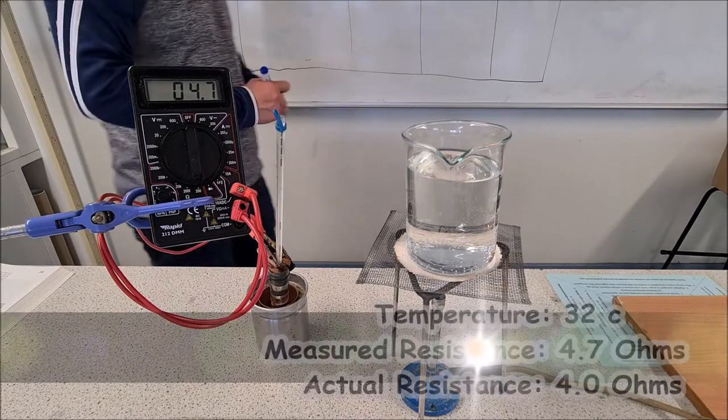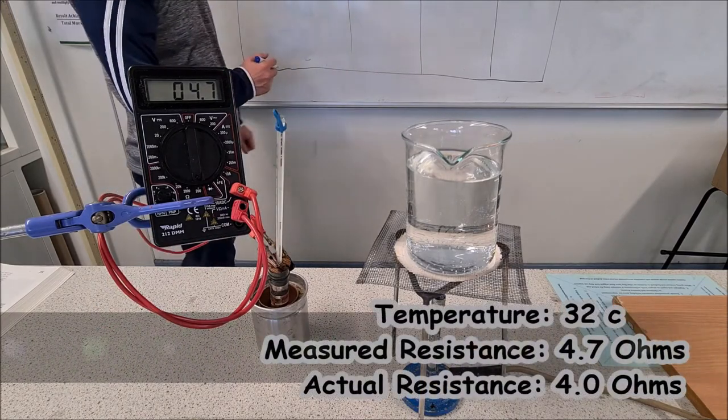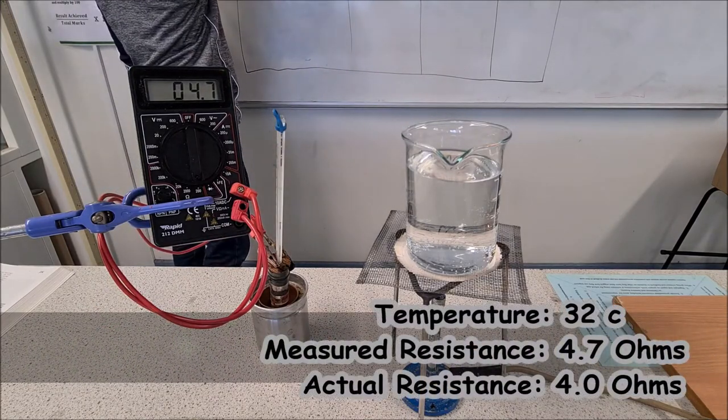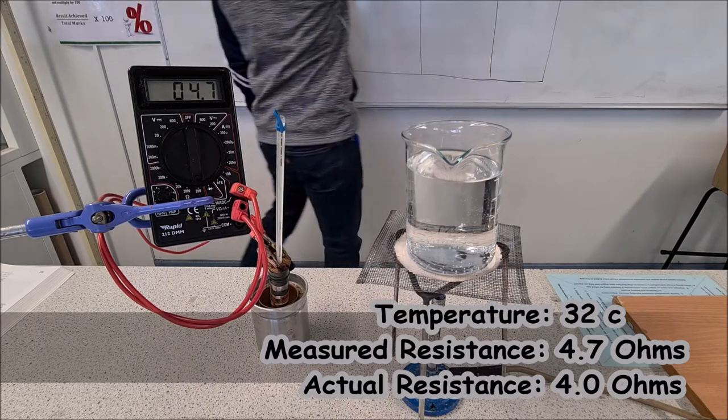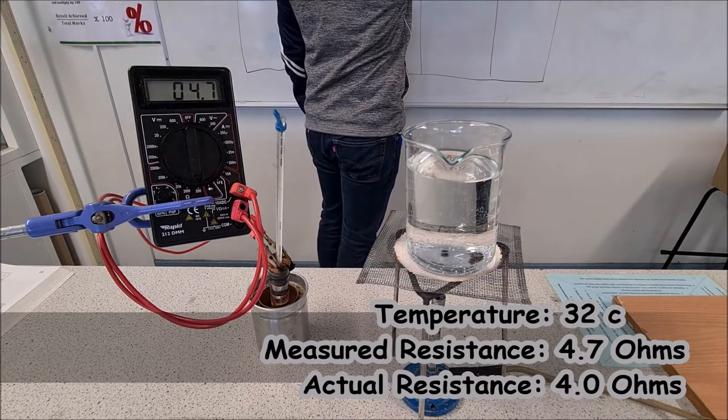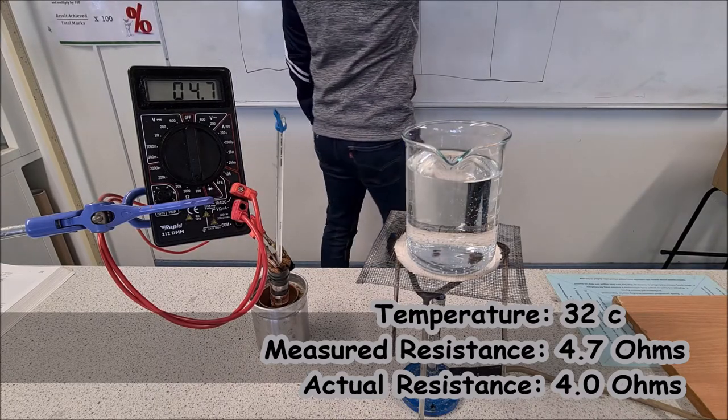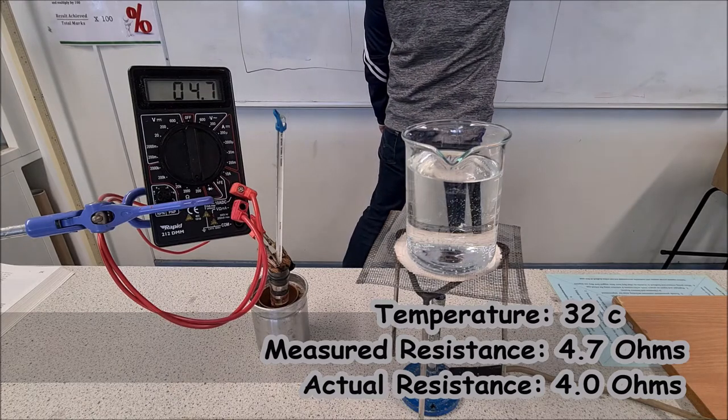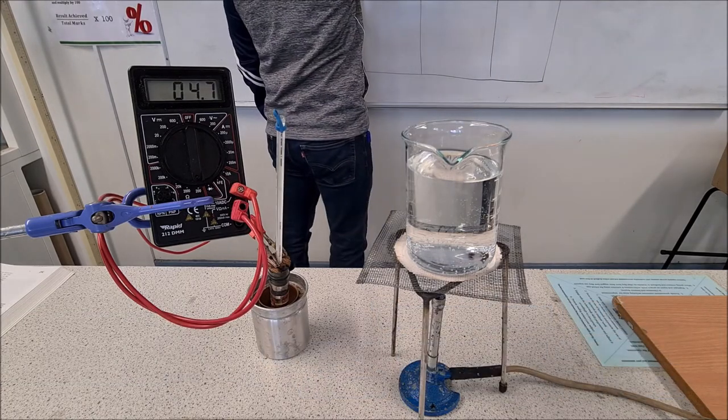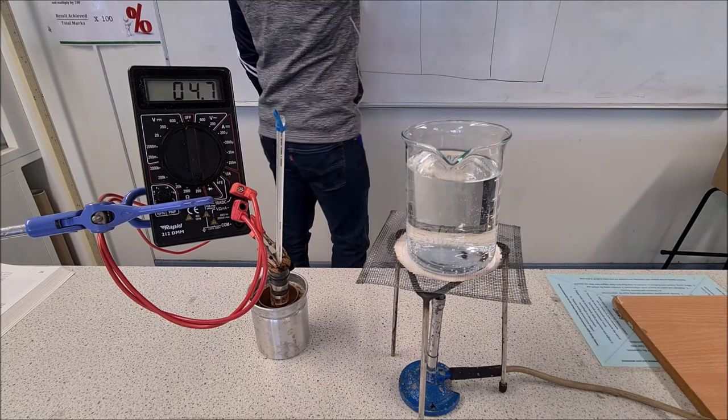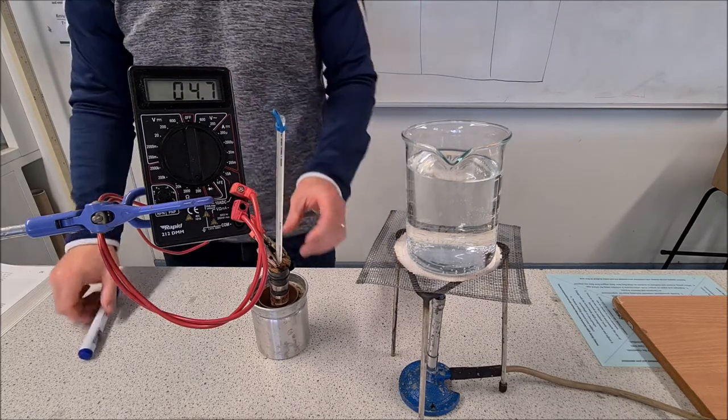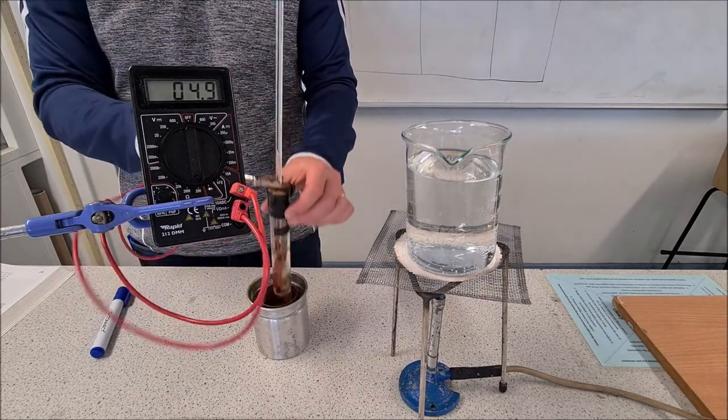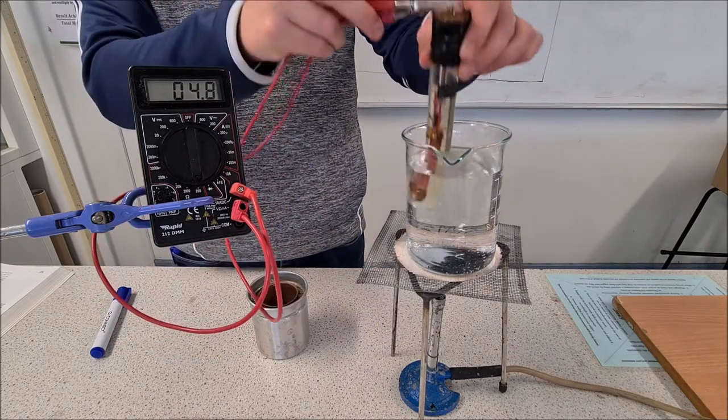At 32 degrees the resistance is 4.7. It's gone up by 0.2 so it's now 4.0 ohms. The internal resistance stays the same. We're going to put it back in and we'll come back when it's close to 50.